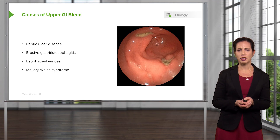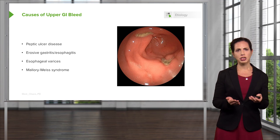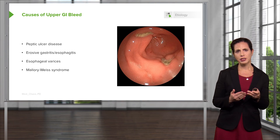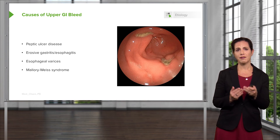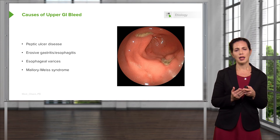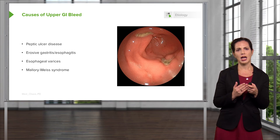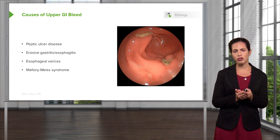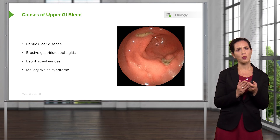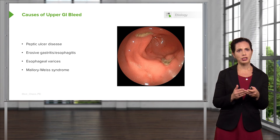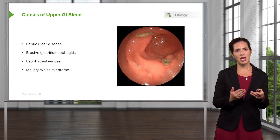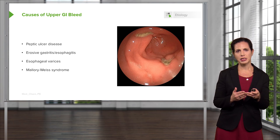Esophageal varices are generally seen in patients who have liver disease. The liver disease causes backup into the esophagus, making those blood vessels enlarged — variceal blood vessels, similar to varicose veins on your leg. They are abnormally friable blood vessels in the esophagus. Mallory-Weiss syndrome involves small tears in the wall of the esophagus that cause bleeding, most commonly in patients who have been vomiting repeatedly.